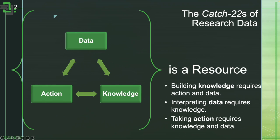Building knowledge requires action and data. We need to have taken action to make the measurements, we need to use and interpret the data in order to develop that knowledge. But interpreting the data requires knowledge a priori — so we've already set up this chicken-or-the-egg catch-22. And taking the actions, and importantly knowing what actions to take, requires both knowledge and data.